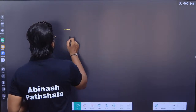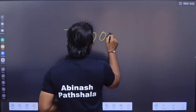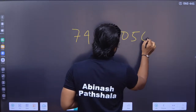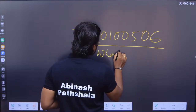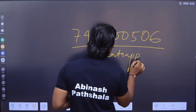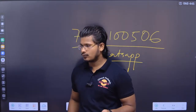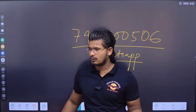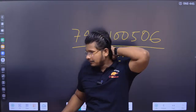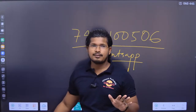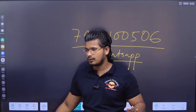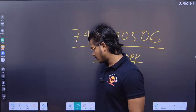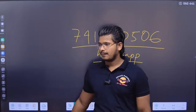If you have a problem regarding your preparation, your contact number is 7410100506. So this is all about your syllabus and plan. We will review the comments section, and we will also review the syllabus. Do not worry — we have everything covered.